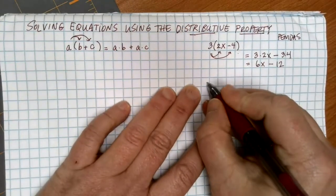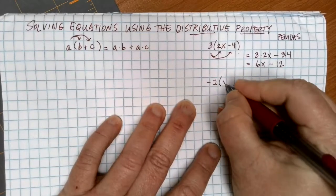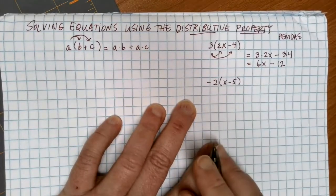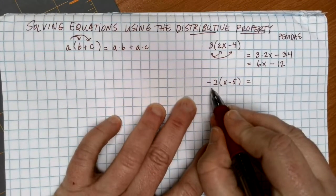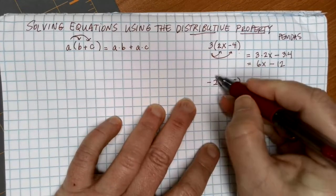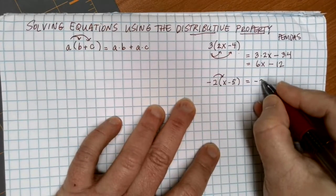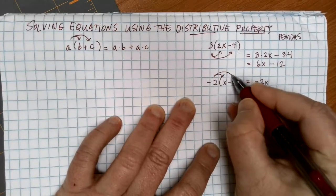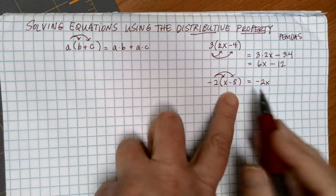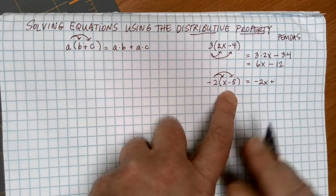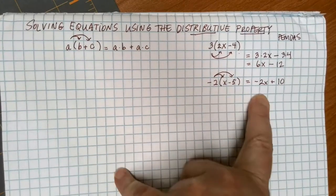Let's try another example. Suppose that we have negative 2 being multiplied by the difference of x minus 5. I can use the distributive property because I have something being multiplied by a group inside. I'll multiply negative 2 times x, which gives me negative 2x. Then I multiply negative 2 times the minus 5. If you think of this as a negative 5, negative times negative makes this a positive, and what I end up with is negative 2x plus 10 when I use the distributive property.